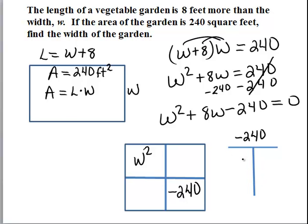So the only factors that come to mind are 12 and 20, since 12 times 20 is 240. So let's think about this for a minute. A positive times a negative or a negative times a positive are the only ways that we will get a negative 240 here.